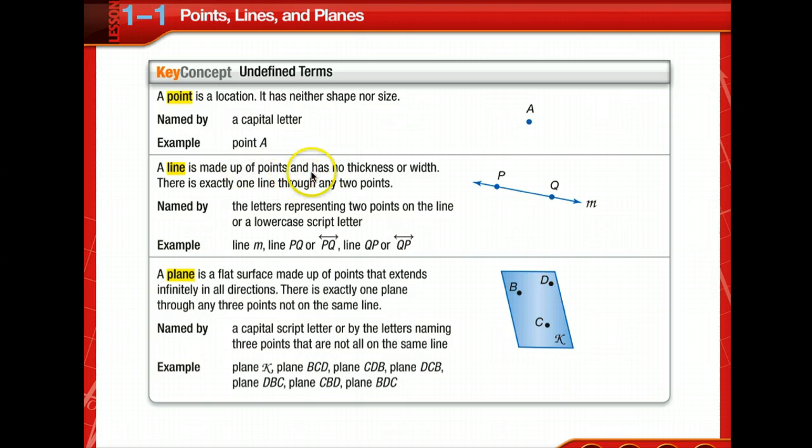A line, it's made up of points, and it has no thickness. So this line is not thick. It doesn't have a width. And there's exactly one. Now this phrase, exactly one, means one and only one. So whenever you see this in mathematics, exactly one means one and only one line through any two points. Now you'd name a line by naming the two points, or sometimes it's labeled with its own little script letter. So we can refer to this as line M, or PQ, or line PQ, or QP, or line QP.